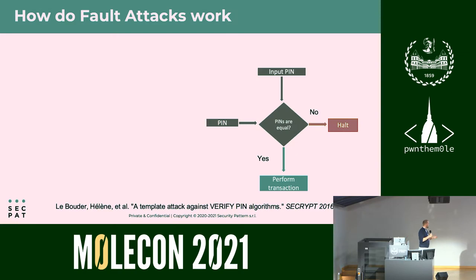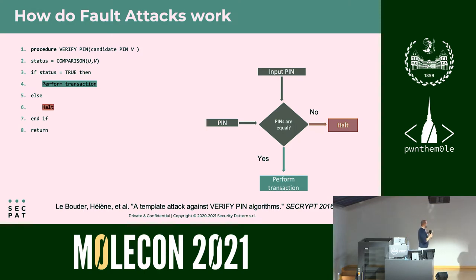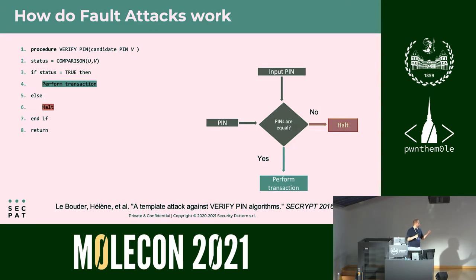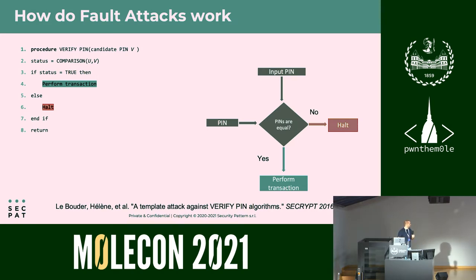From this flowchart, how can the general implementation be expressed? This is a generic view of the code. The function is verify_pin, which takes a candidate PIN from the user. In step two, the first function compares the card PIN against the input PIN. If they are equal, the function returns status true; if different, status false. In step three, there's an if condition: if the status is true, the transaction is performed; if not, it jumps to step six and the transaction is stopped.